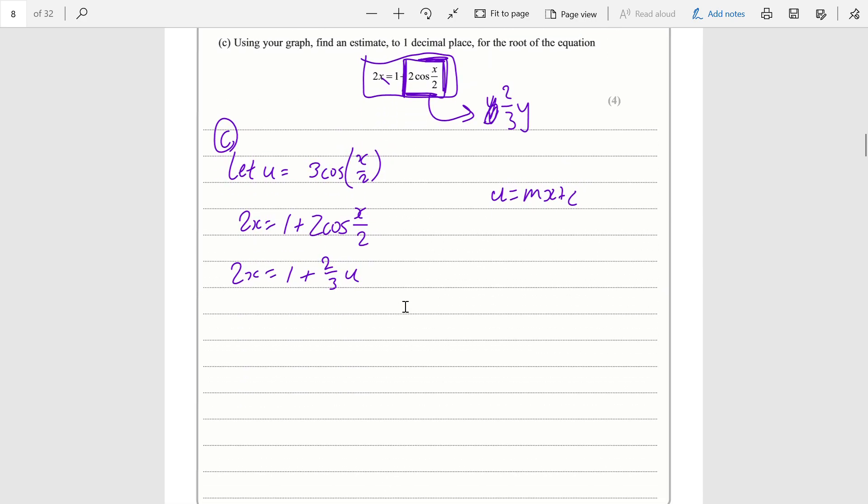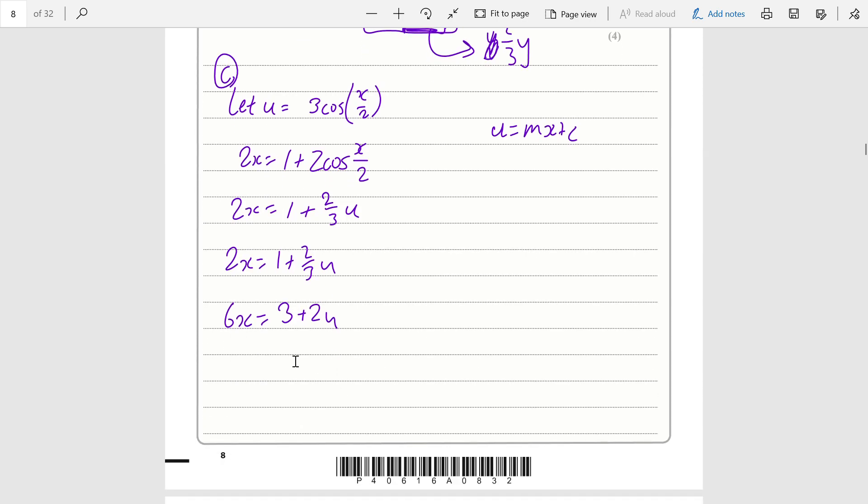So you have 2x = 1 + 2/3u. You can multiply by 3 to get rid of the denominator: 6x = 3 + 2u, or rather 2u = 6x - 3. Dividing both sides by 2 to get your form u = mx + c, so we have u = 6/2 = 3x minus 3/2.